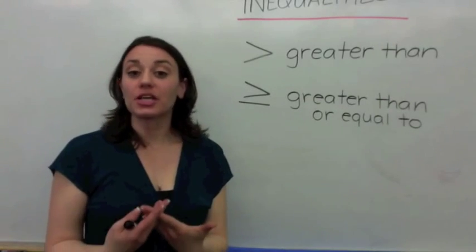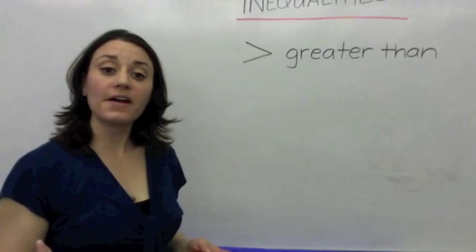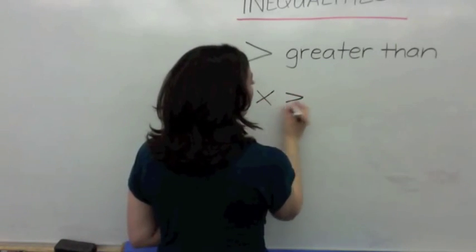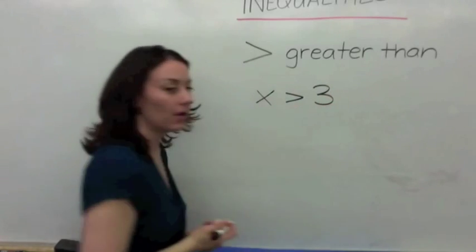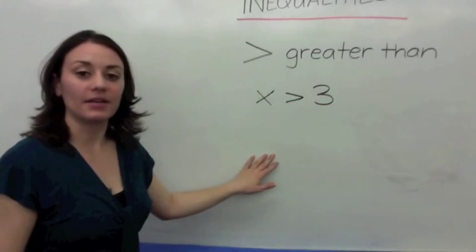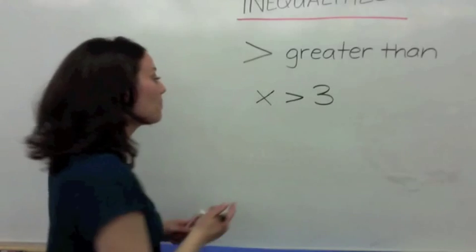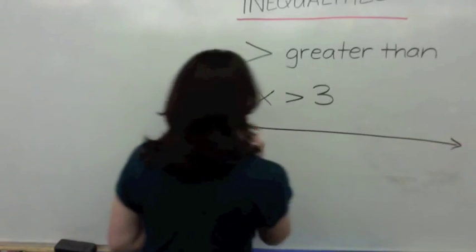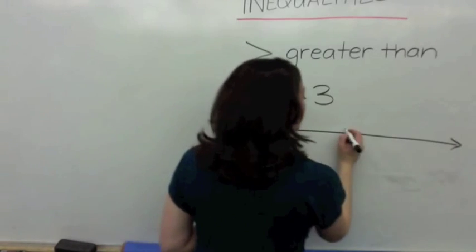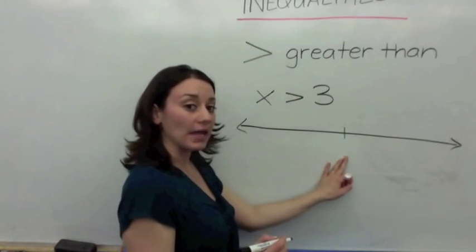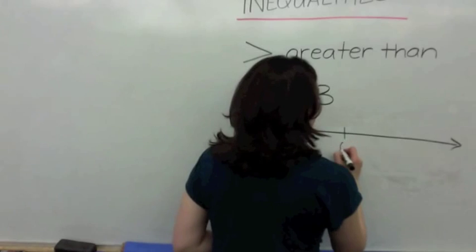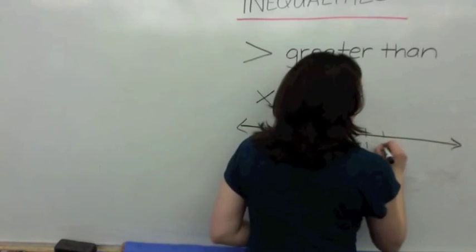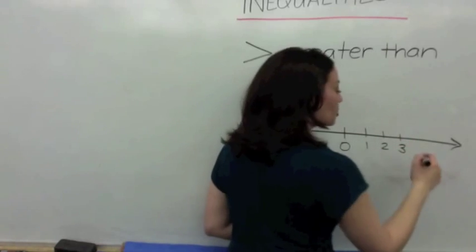I'm going to show you the first inequality. What if I tell you that X is greater than 3? The best way to illustrate this is by drawing a number line — a horizontal line with arrows on both sides. In the middle of a number line is zero. On the positive side we have 1, 2, 3, and let's just keep going.